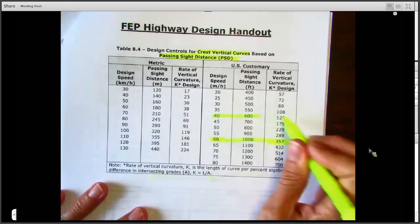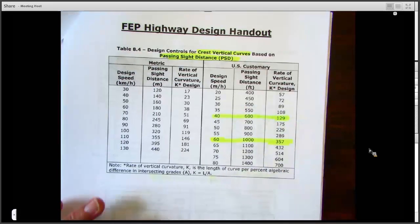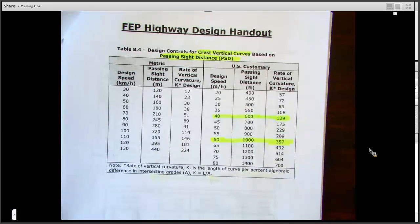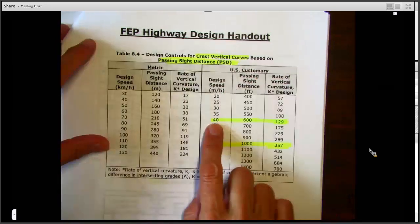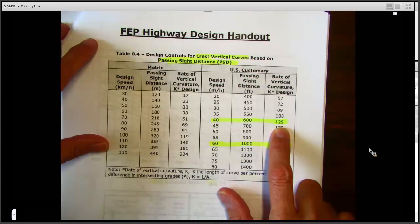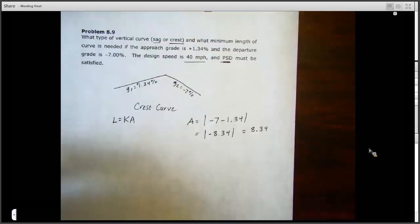Remember the first value you'll see here is the passing sight distance in feet, but we don't want that. We want the K value, so we'll continue over here to get our 129 for our K value. And remember this side is metric, we're not using that one. So just looking on this side for 40 and picking off our K value, the fifth value down here is 129.